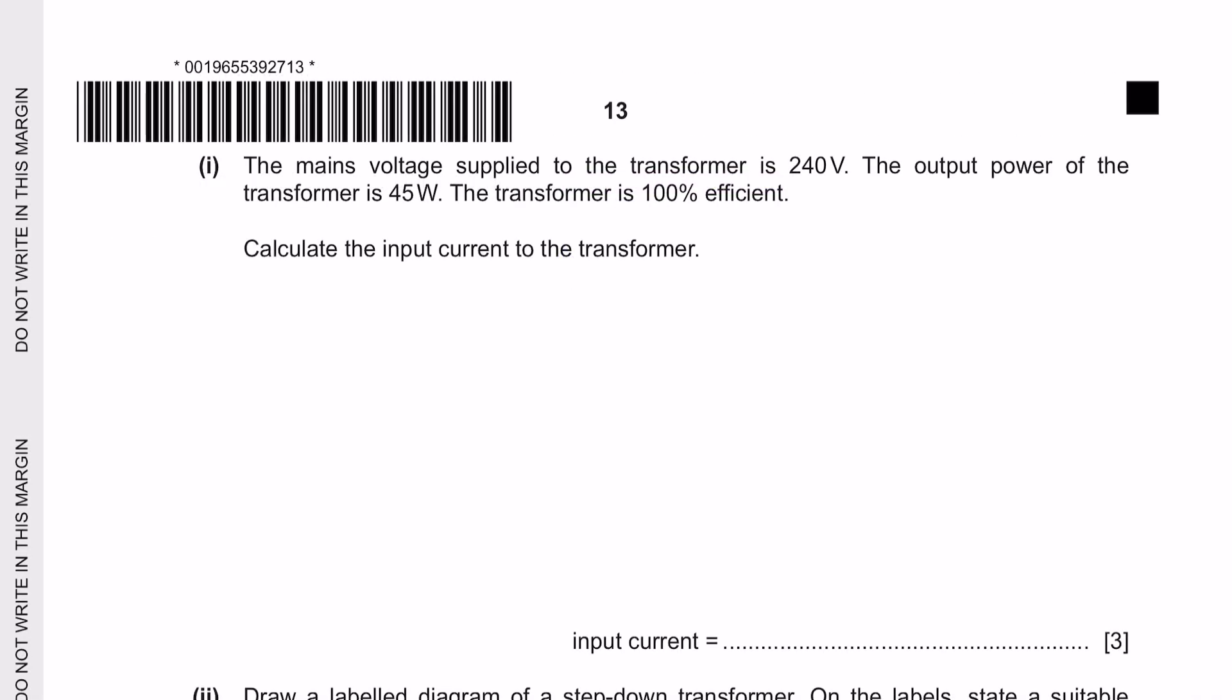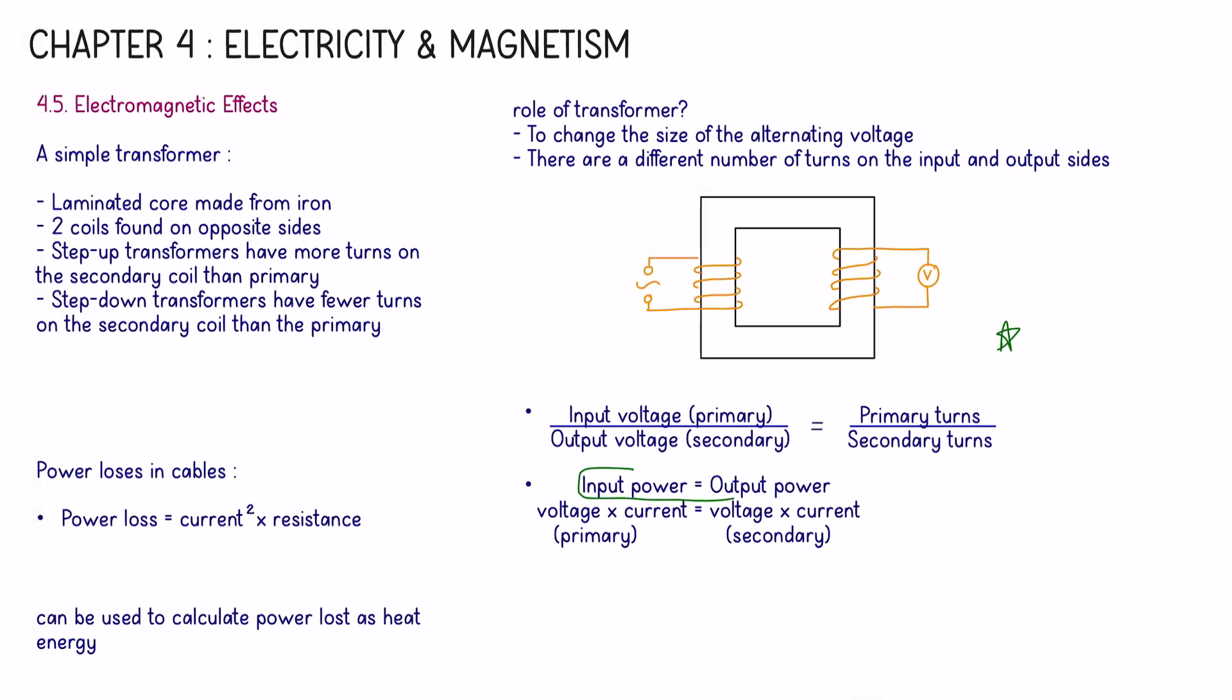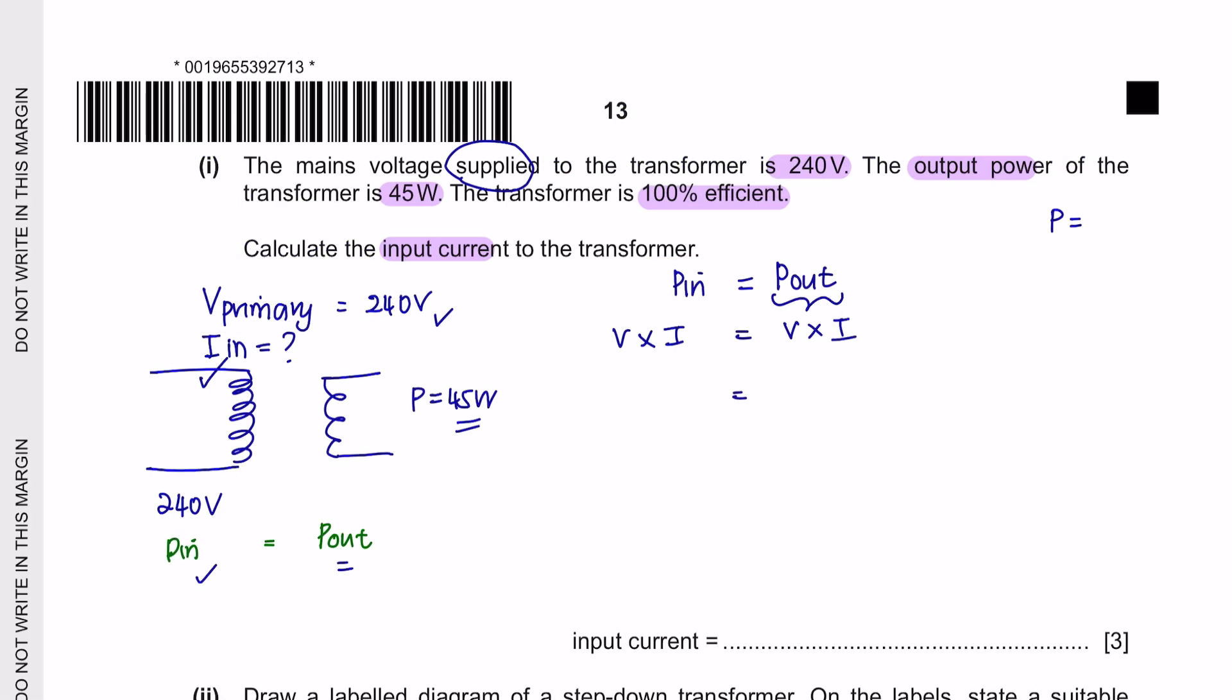Question part 1. The mains voltage supplied to the transformer is 240 voltage. So supplied here being the primary voltage or the voltage input. The output power of the transformer is 45 watts. The transformer is 100% efficient. 100% efficiency means that the power in is equal to the power out. Calculate the input current to the transformer. So we are looking to find the current at the primary coil. The formula related to this would be input power equal to output power whereby the voltage and current of the primary coil is equal to the voltage and current of the secondary coil. We already know that the power out is 45 watts. The voltage in the primary coil is 240 and we're looking to find the current. So the current that we will obtain is 0.19 amperes.